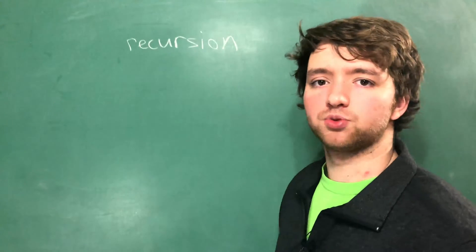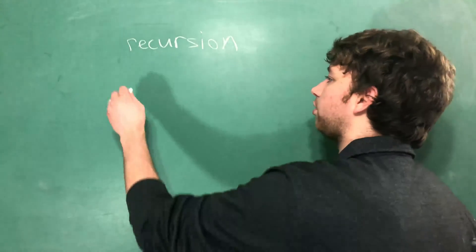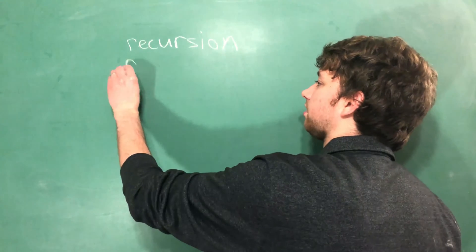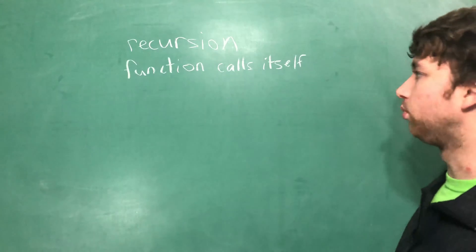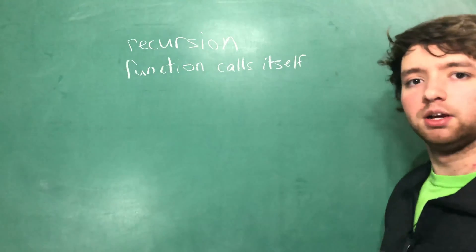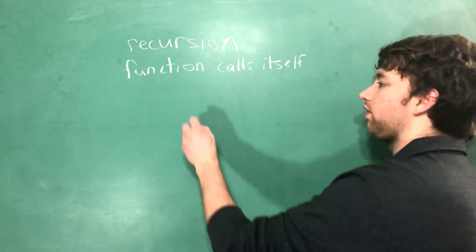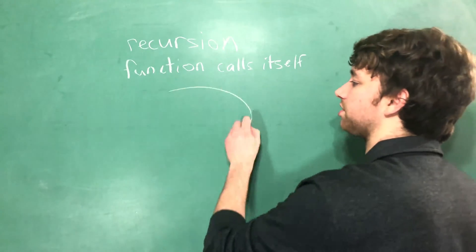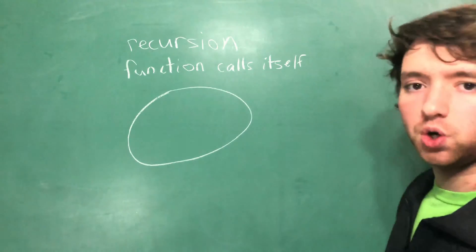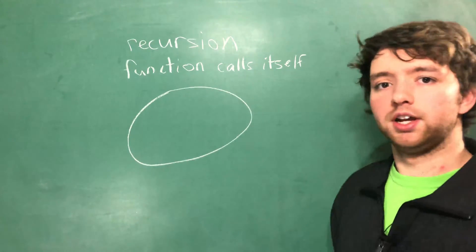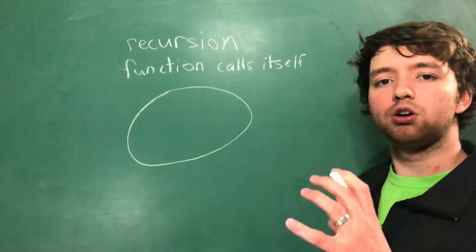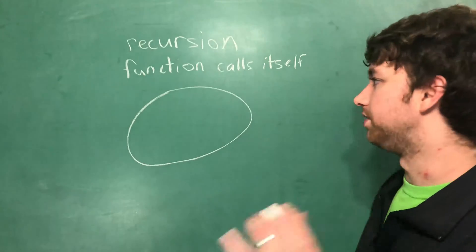So what is recursion? Put simply, recursion is a function that calls itself. It's really super weird when you first start learning about it, but essentially let's say you call a function on some set of data — what recursion is going to do is call the same function on a smaller set of the data.